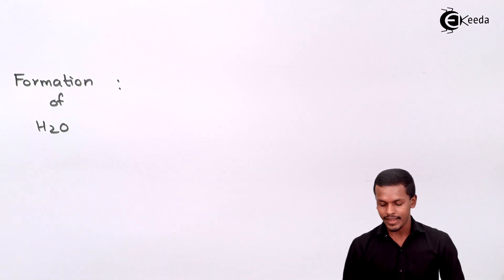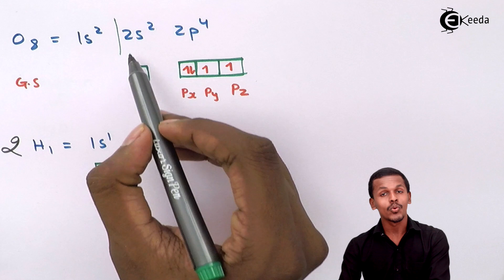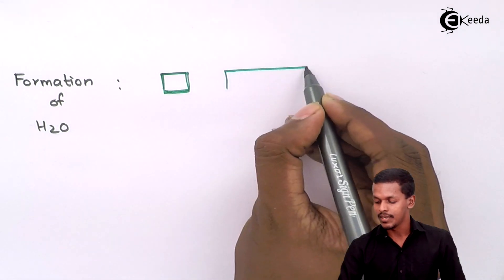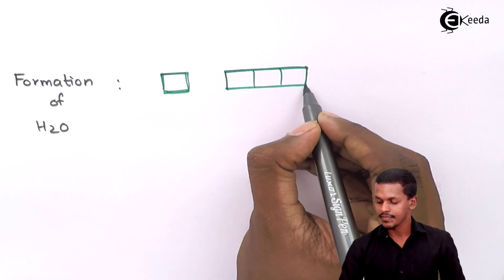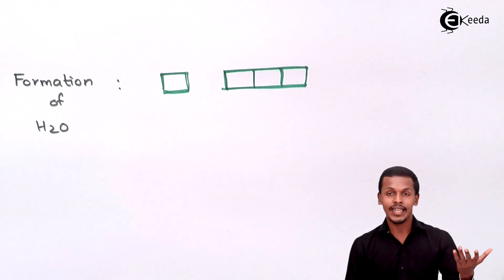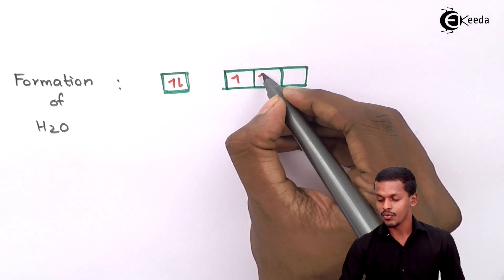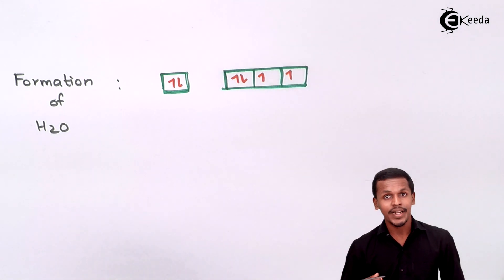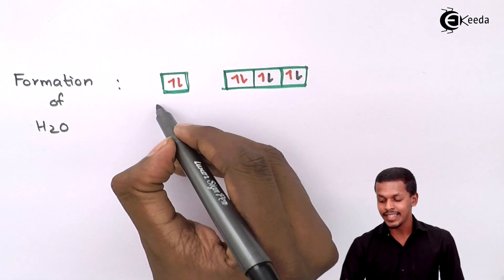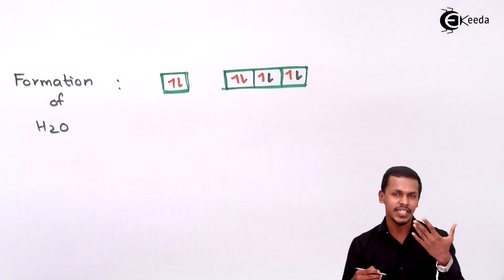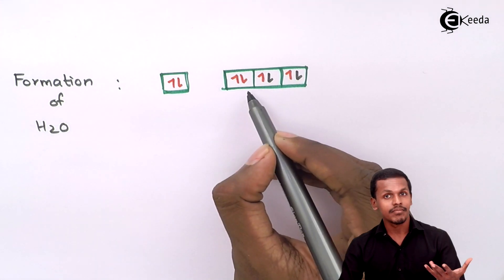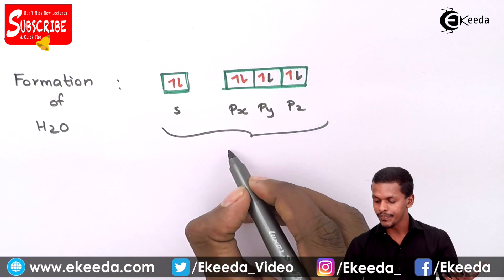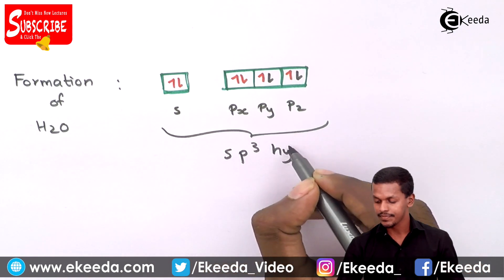Now let us talk about the electron pairs. In VSEPR theory, we focus on the central atom. The 2s orbital and the three 2p orbitals — px, py, and pz — of oxygen together account for six valence electrons, plus one electron from each of the two hydrogens, ultimately giving us an sp³ hybridized structure of water.